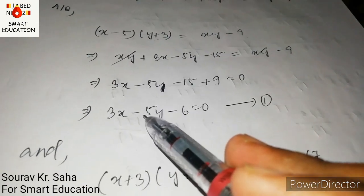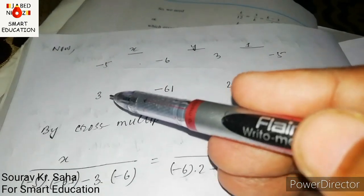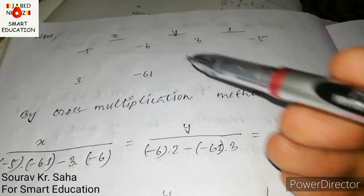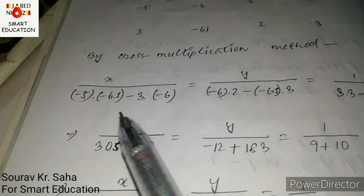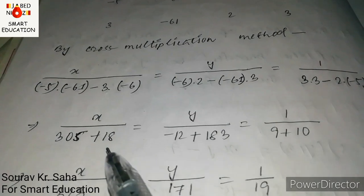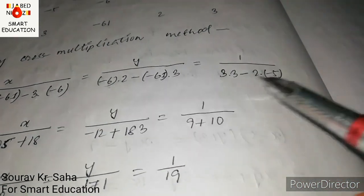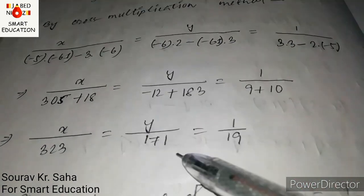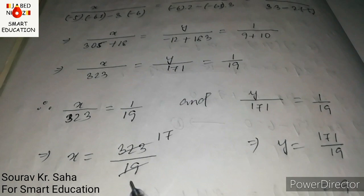Applying cross multiplication to equations one and two. Coefficients: equation one — 3, minus 5, minus 6 — and equation two — 2, 3, minus 61. By cross multiplication: x by (−5 × −61 − 3 × −6) = x by (305 + 18) = x by 323; y by (−6 × 2 − (−61) × 3) = y by (−12 + 183) = y by 171; and 1 by (3 × 3 − 2 × −5) = 1 by (9 + 10) = 1 by 19. From x by 323 equals 1 by 19: x = 323 ÷ 19 = 17.